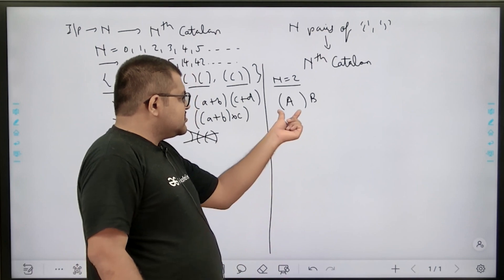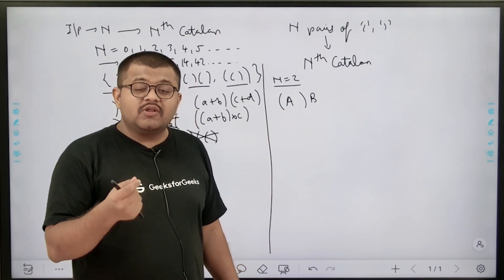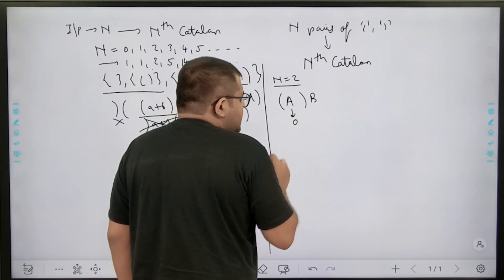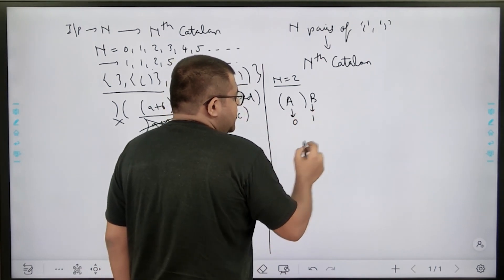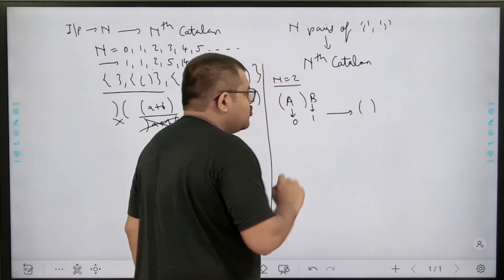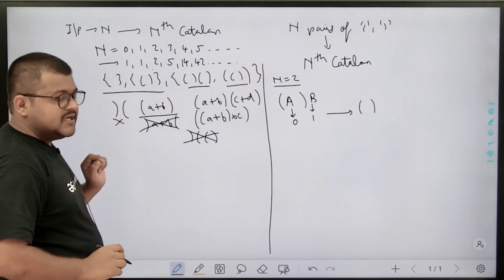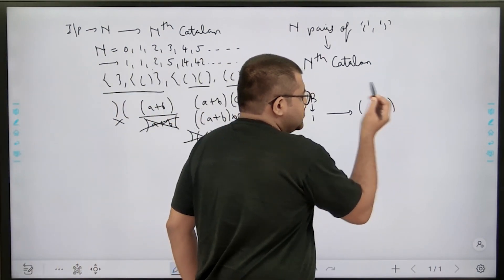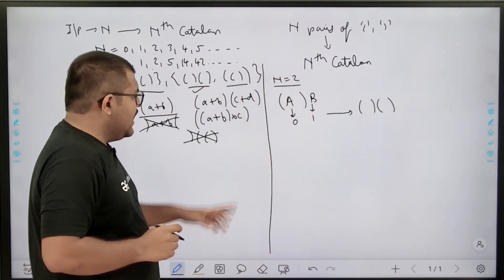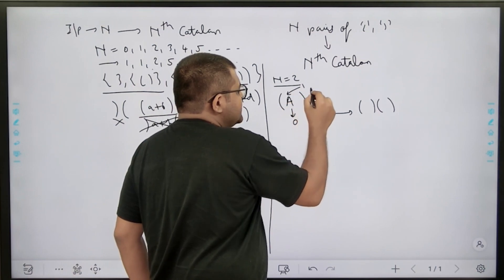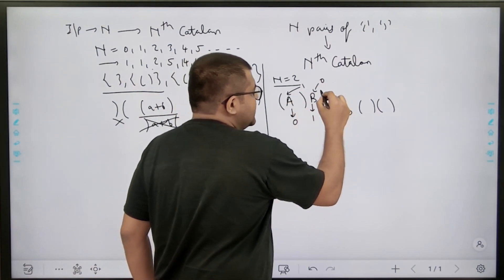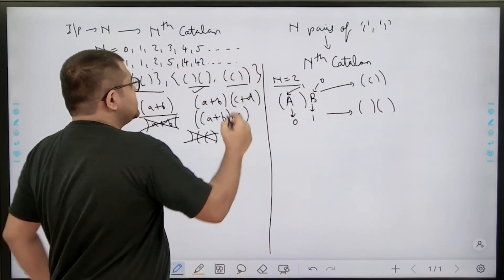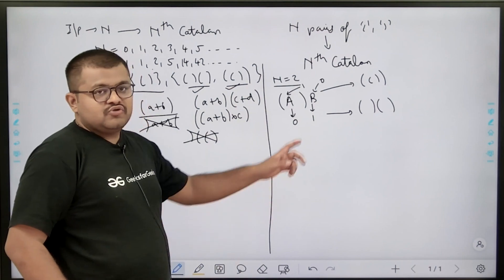For n = 2, I take one pair as the 'outer' bracket. Now there will be some expression inside it and some expression outside it, and the total number of remaining pairs is 1. There can be two ways: one way is zero pairs inside and one pair outside, and another way is one pair inside and zero pairs outside. So I get 2 ways, which matches the 2nd Catalan number.